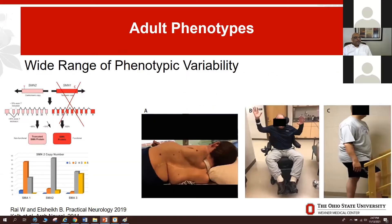As you heard earlier today from several of the speakers, SMA results from deficiency of the survival motor neuron protein, caused by deletion or mutation of the SMN1 gene. You also need retention of the SMN2 gene — at least one or more copies. The SMN2 gene produces small amounts, around 10 to 15 percent, of the fully functional SMN1 protein.